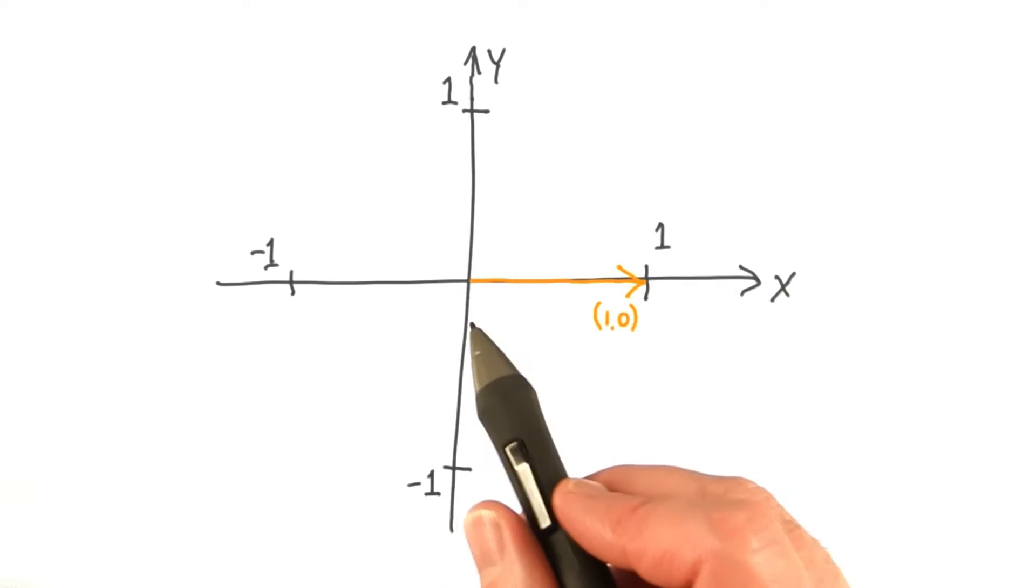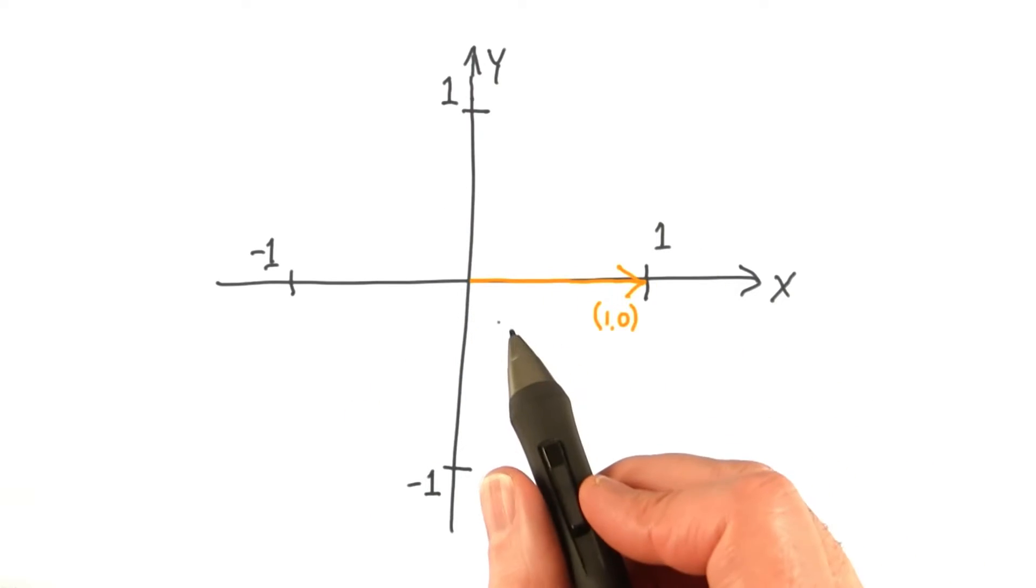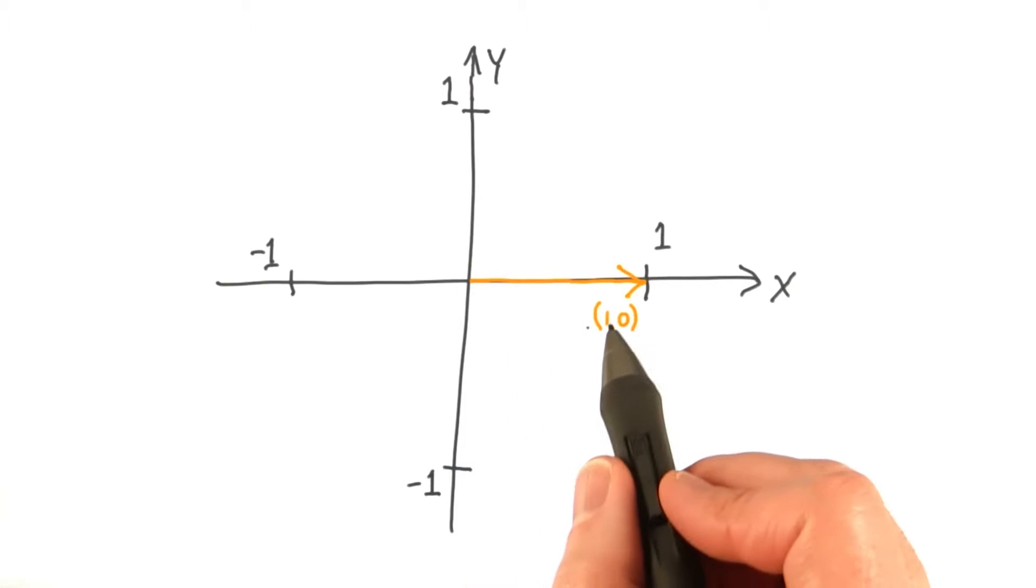So here's our x, y coordinate system, and let's just forget about z for now. Let's start with a normalized vector 1, 0, pointing along the x axis.